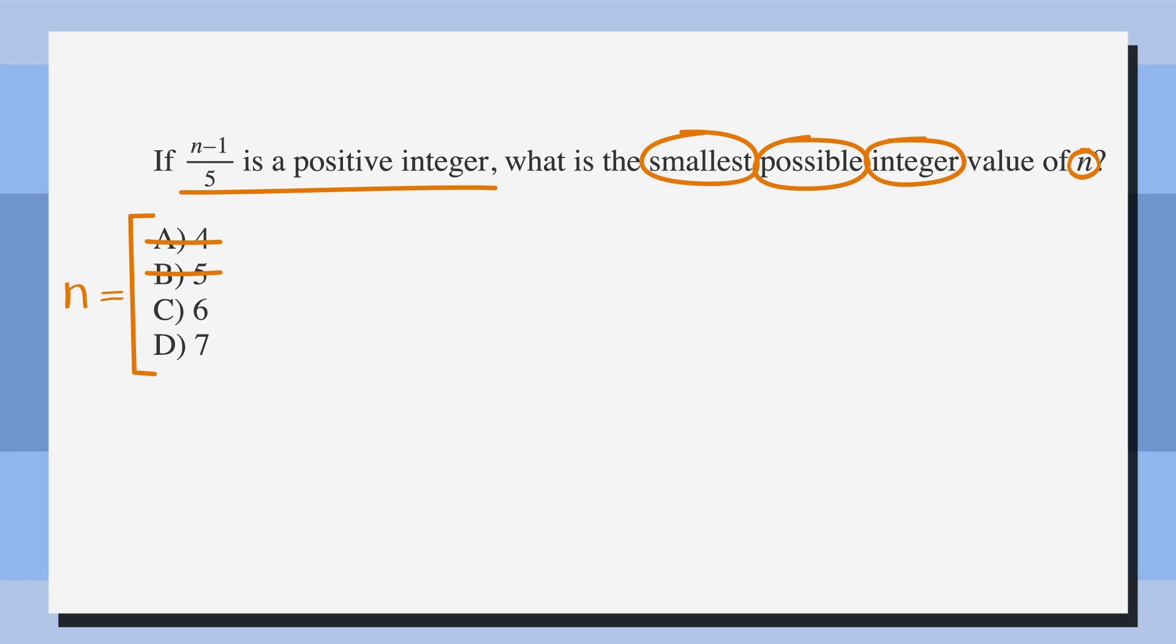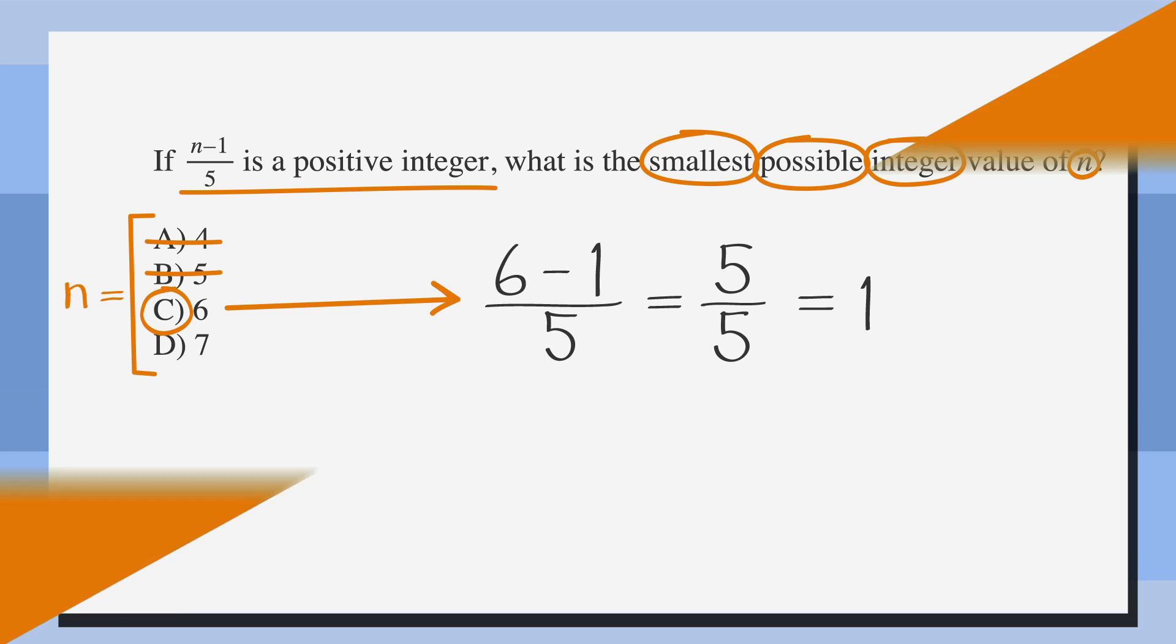Let's try C. n equals 6. Our fraction from the question becomes (6-1)/5. Doing the subtraction, our fraction becomes 5/5, which equals 1, an integer. Looking at our answer choices, C is correct. Knowing what an integer is and using the back solving strategy made our difficult looking problem fairly quick and easy to solve.